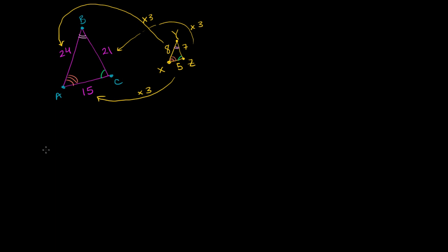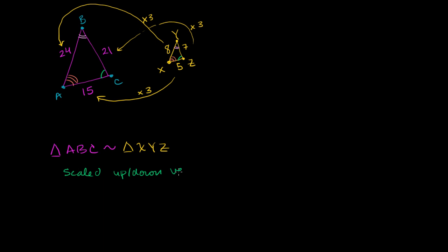We can write that triangle ABC is similar to triangle XYZ — making sure we get the corresponding vertices right. Based on what we just saw, there are three equivalent ways of thinking about similarity. One way is that one triangle is a scaled up or scaled down version of the other.